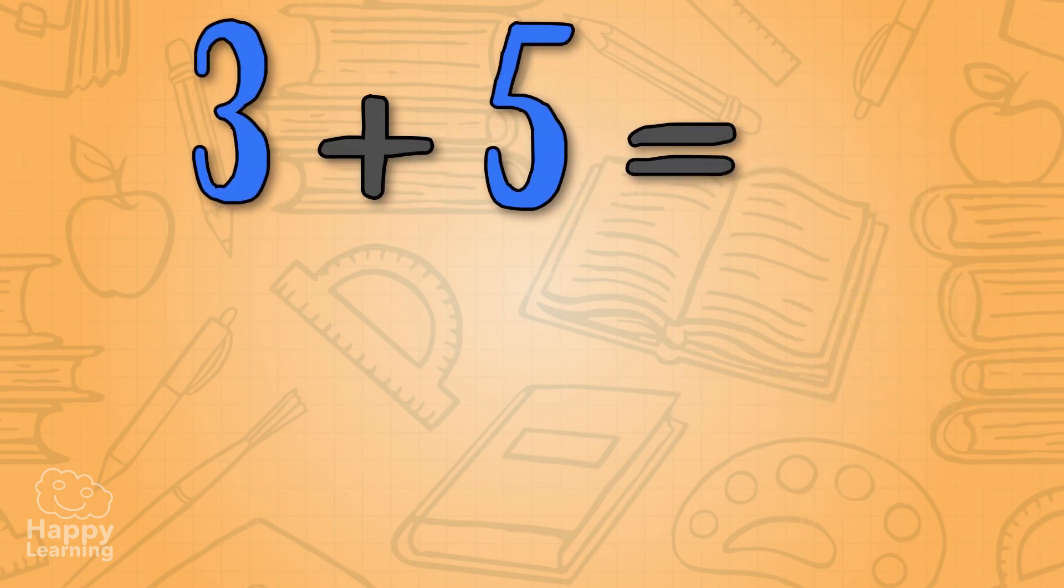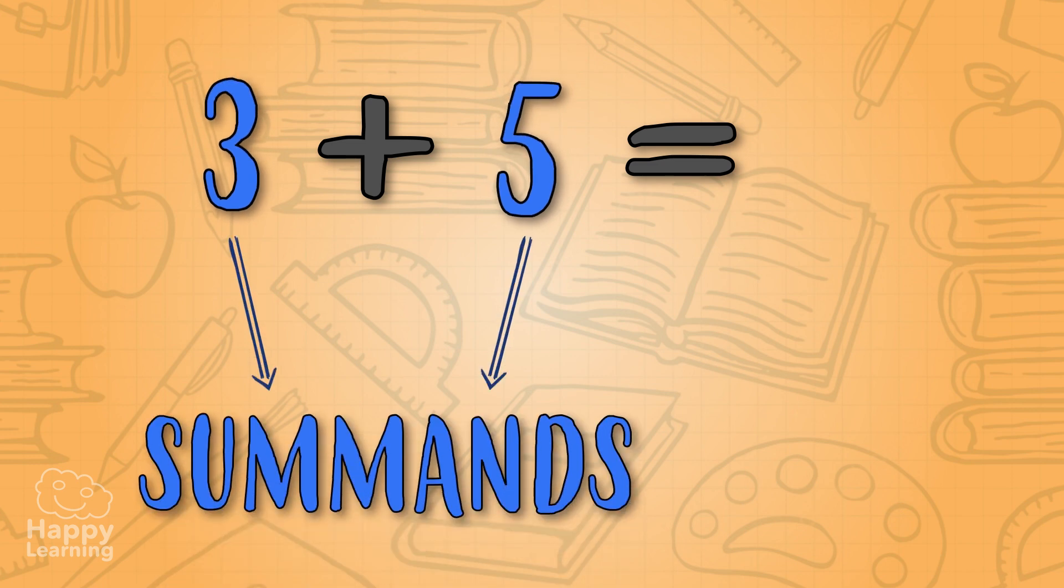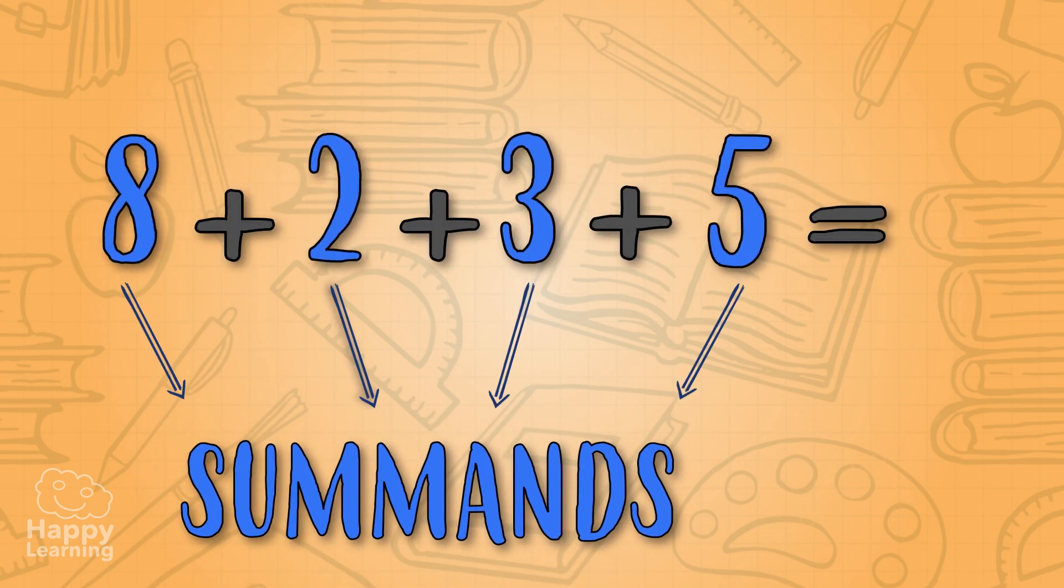Each one of the quantities that we add are called summands. And a simple addition can have as many summands as we wish!